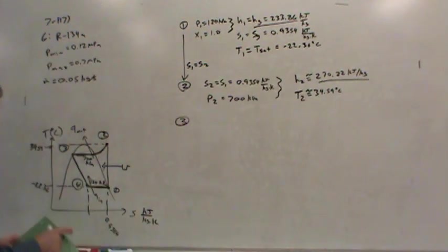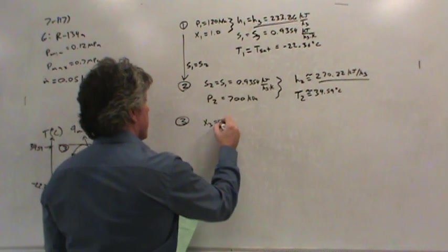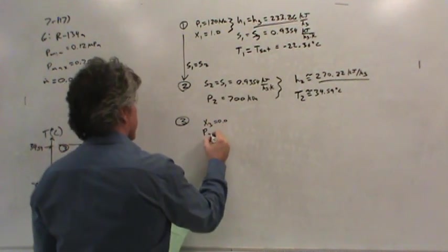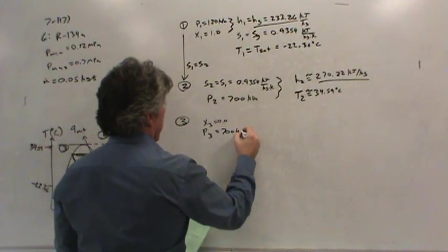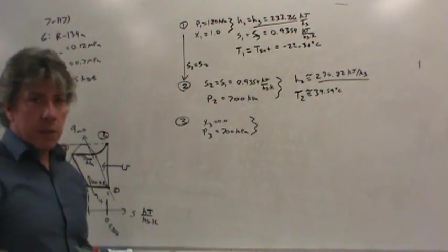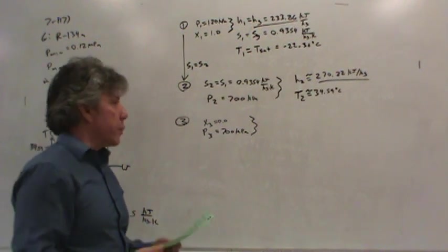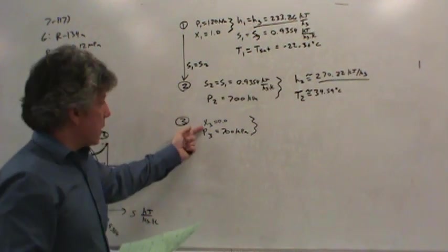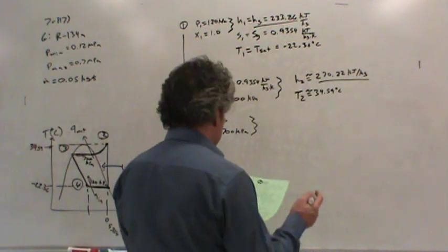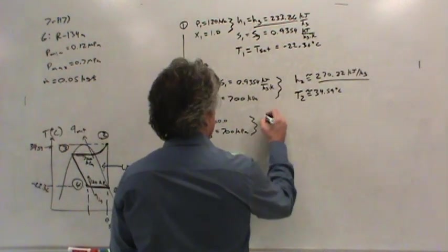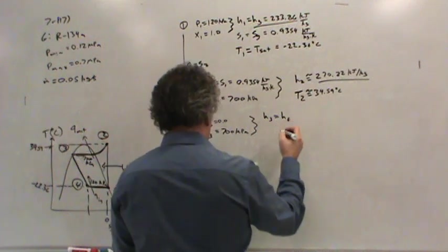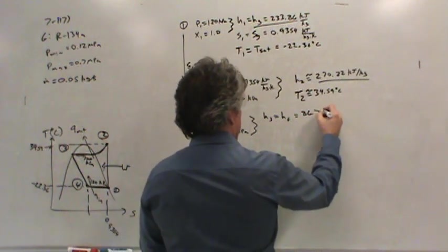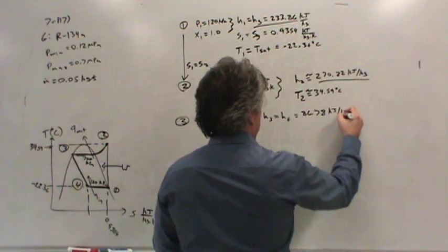State three is special because it's on the saturated liquid line. The quality in state three is 0.0. The pressure in state three is 700 kilopascals. We need to go to the saturated tables and look up 700 kilopascals. The enthalpy is the enthalpy of saturated liquid, 86.78 kilojoules per kilogram.